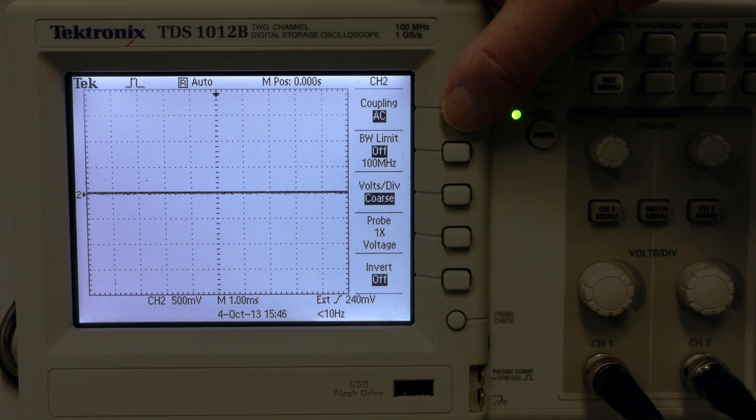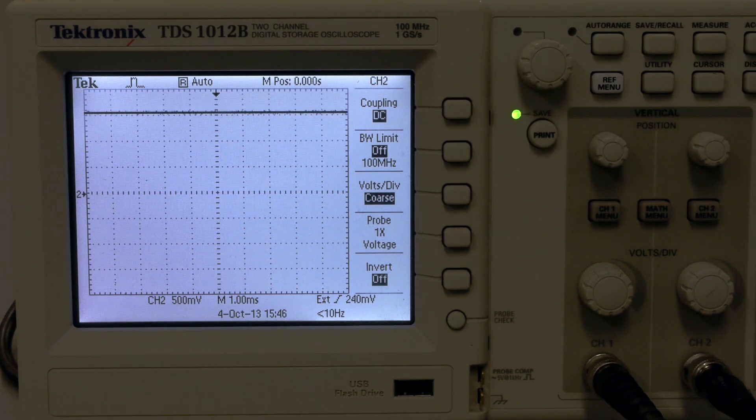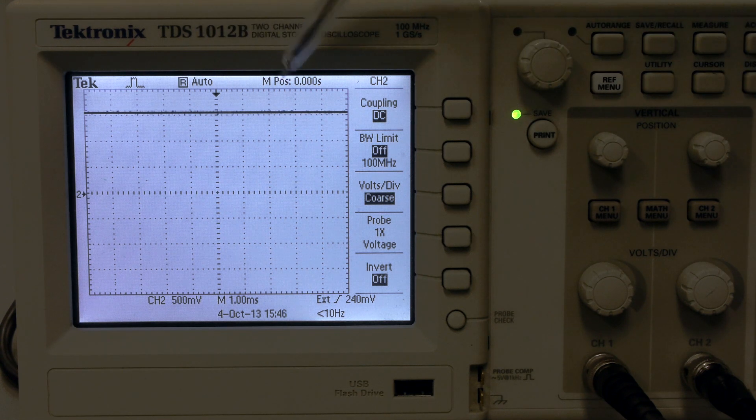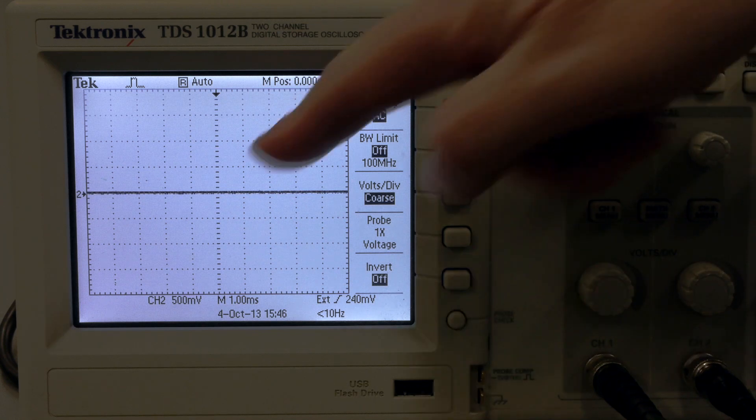So when I press AC coupling, the battery voltage is not varying, so we see nothing. This can be useful sometimes if you've got a very small signal sitting on top of that that you want to see. You want to get rid of the big DC component of it and just see the small AC.